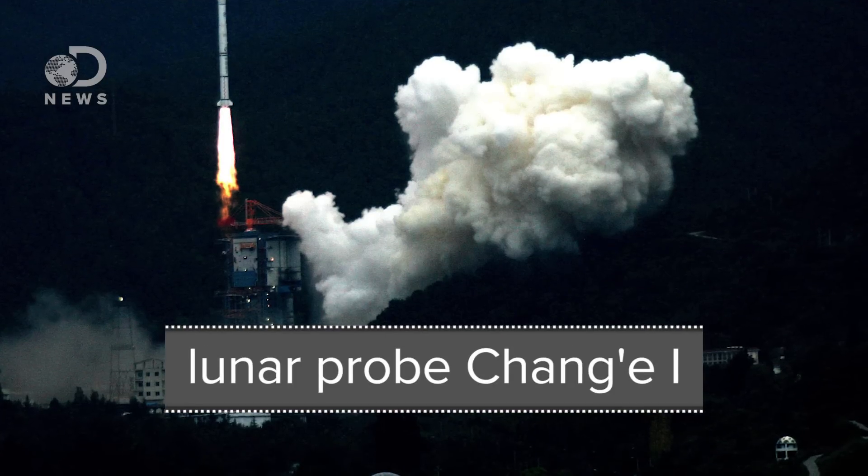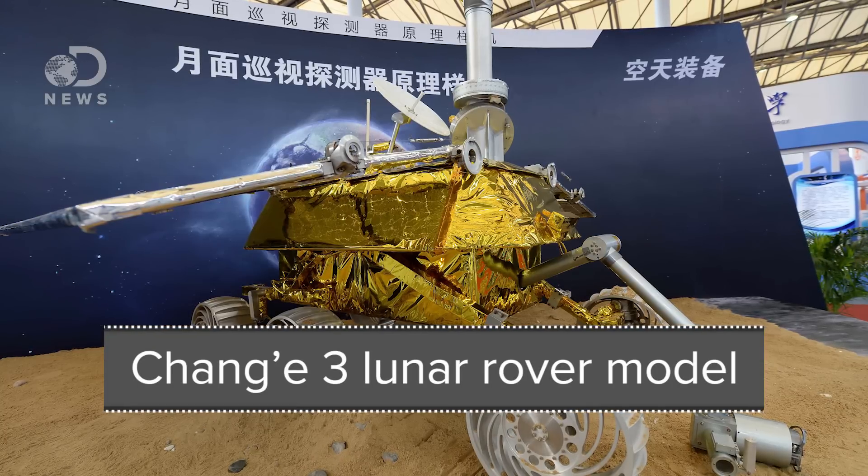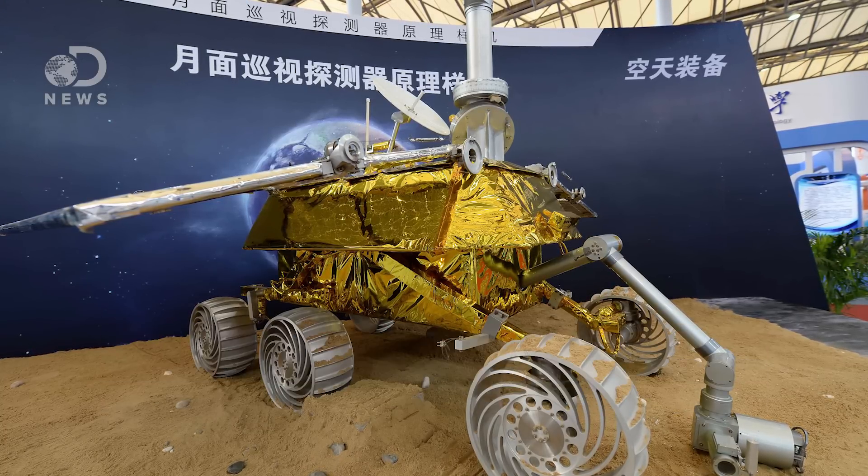They've also sent their own probes, a telescope, and a rover to the moon, and plan to send the first ever rover to the far side of the moon. First though, they'll have to set up a communications satellite at a Lagrange point so the rover can still talk to Earth.